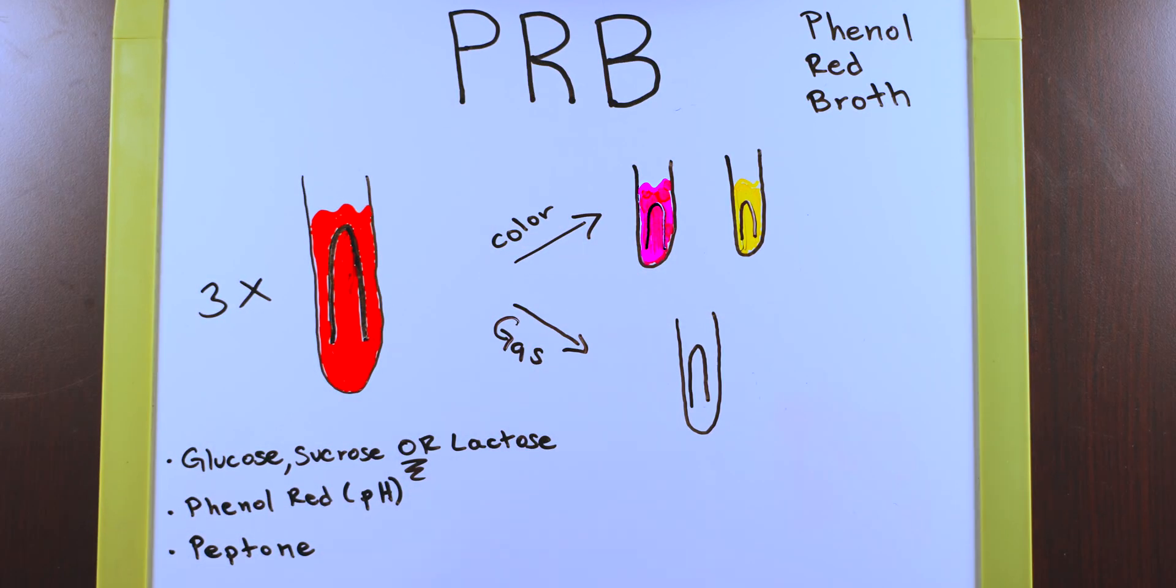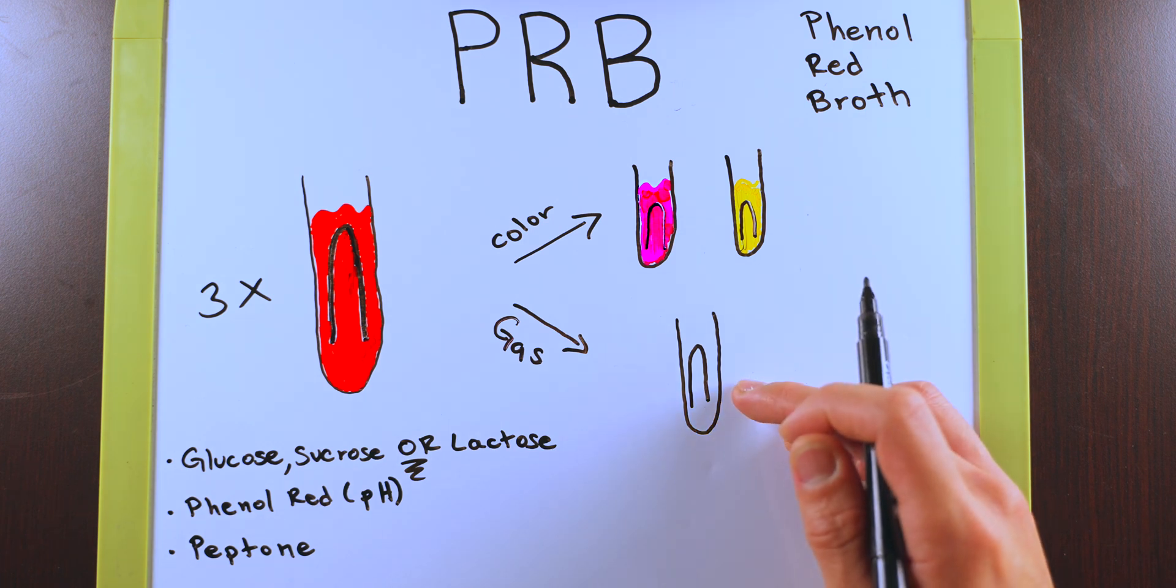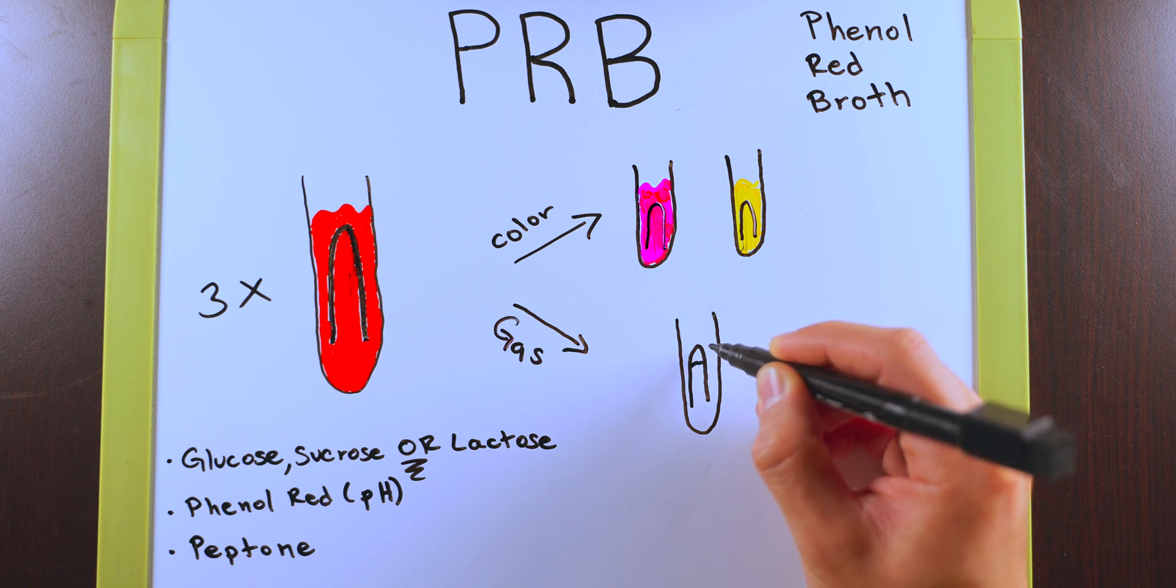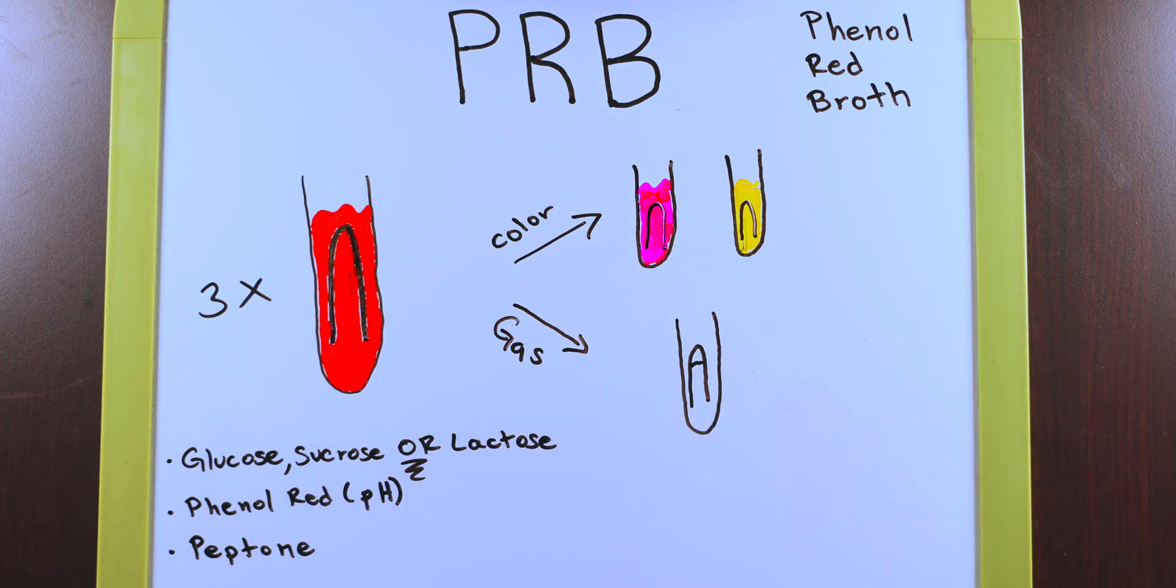You want to look inside the Durham tube of the control as well as the Durham tube in your test results. Is there some sort of bubbling at the top here now or some sort of gas there now that you didn't have before?